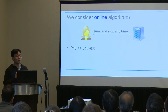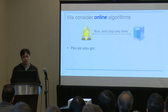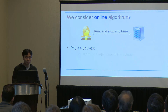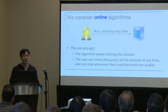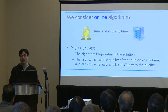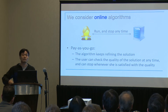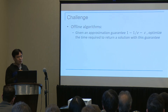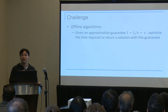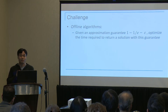In our paper, we look at the problem from a different perspective. We want algorithms that run in an online manner. We assume that the user lets the algorithm run, but from time to time may check its progress. Whenever the user checks, the algorithm is supposed to return a solution and also report the approximation guarantee of the solution. If the user is satisfied with the guarantee, she can stop. Otherwise, she can let the algorithm continue to refine the solution. A natural question is: why can't we just modify existing offline algorithms to run in an online manner?